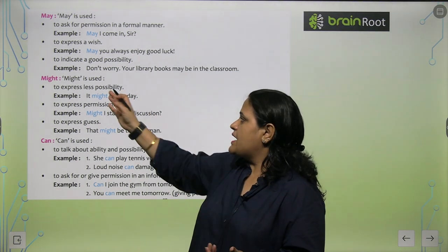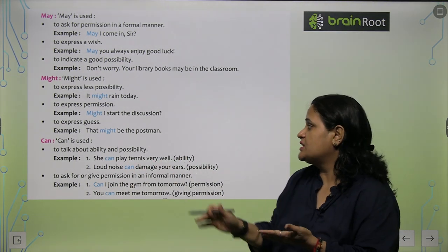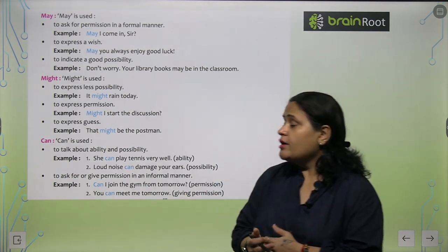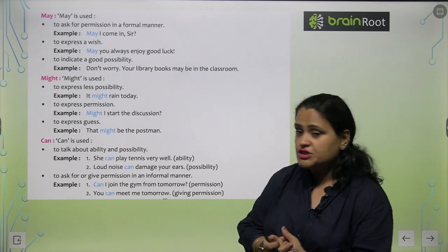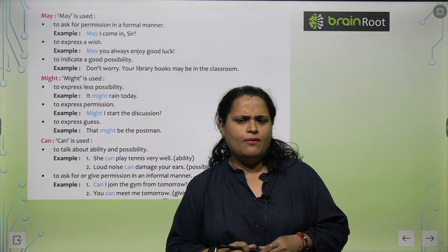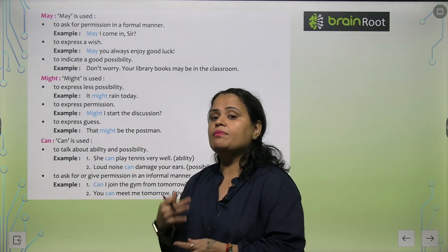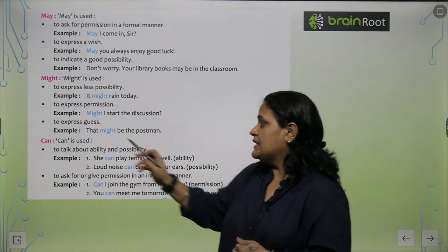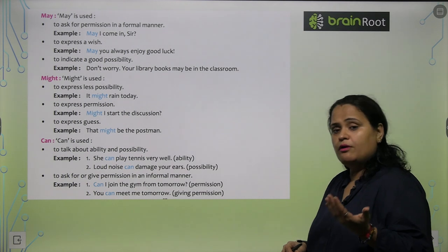'Might' is used jab humay less possibility dikh rahi hoti hai — like 'It might rain today.' Also to show permission — like 'Might I start the discussion?' And for guessing — like 'That might be the host man' — when you are not clear who it is, but you are guessing. So you use 'might' here.